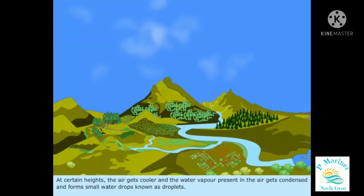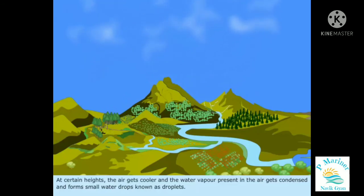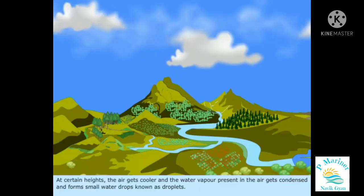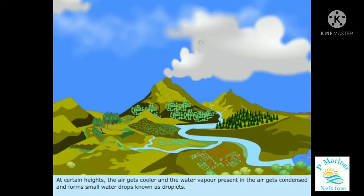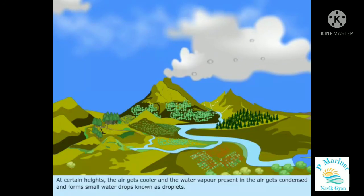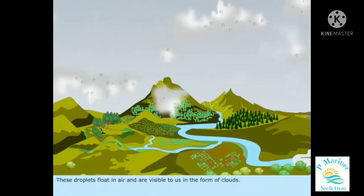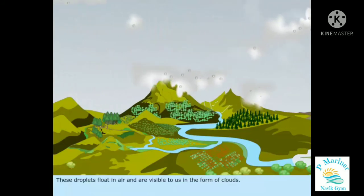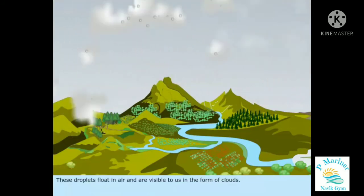At certain heights, the air gets cooler and the water vapor present in the air gets condensed and forms small water drops known as droplets. These droplets float in the air and are visible to us in the form of clouds.